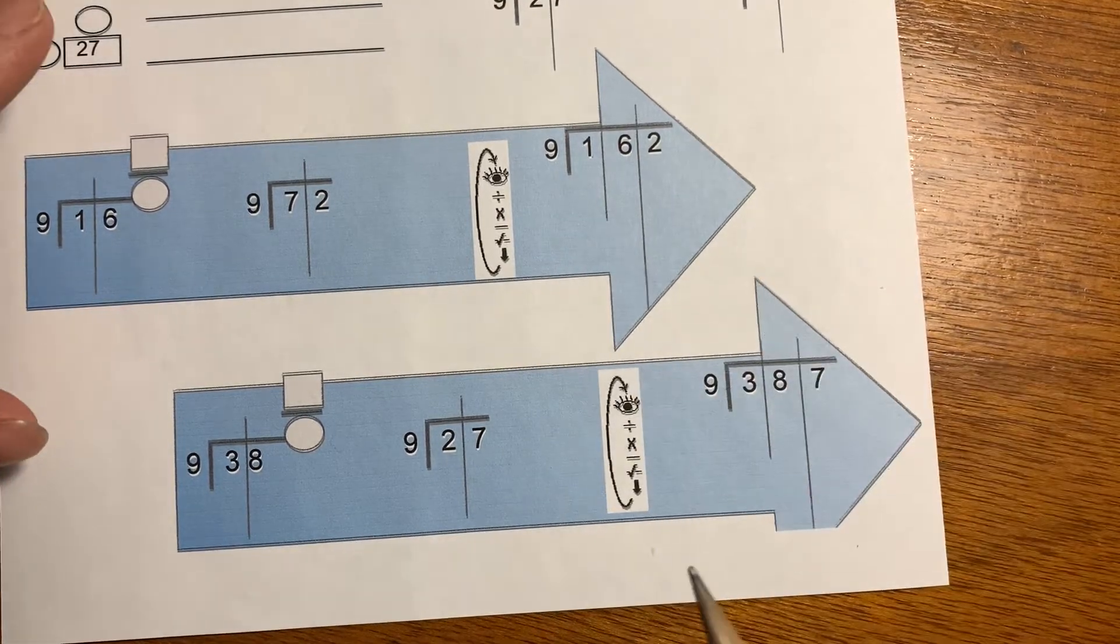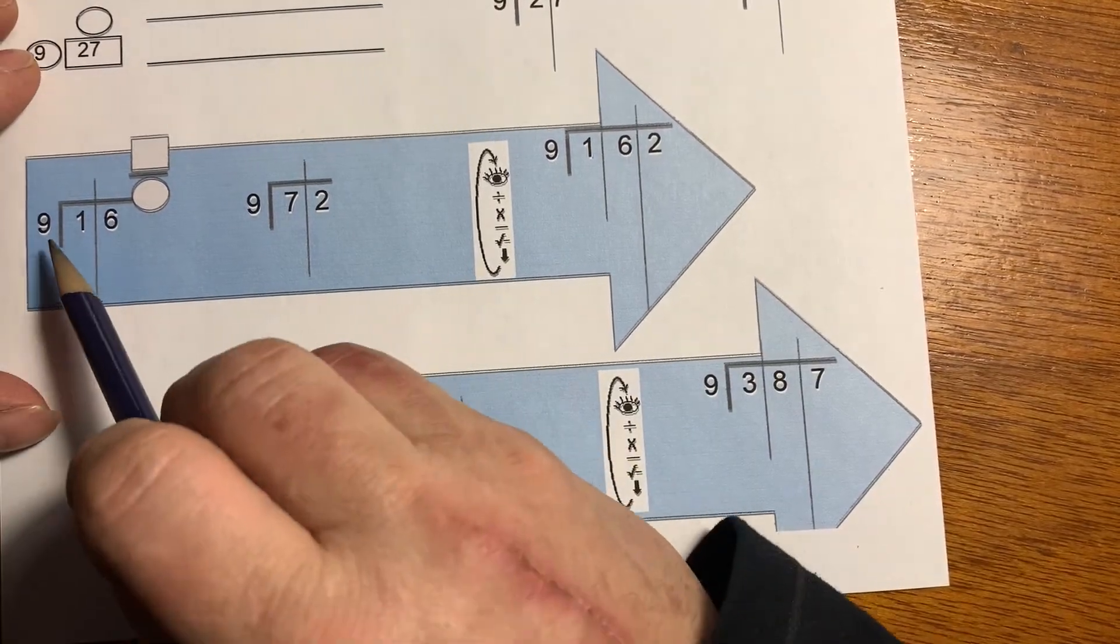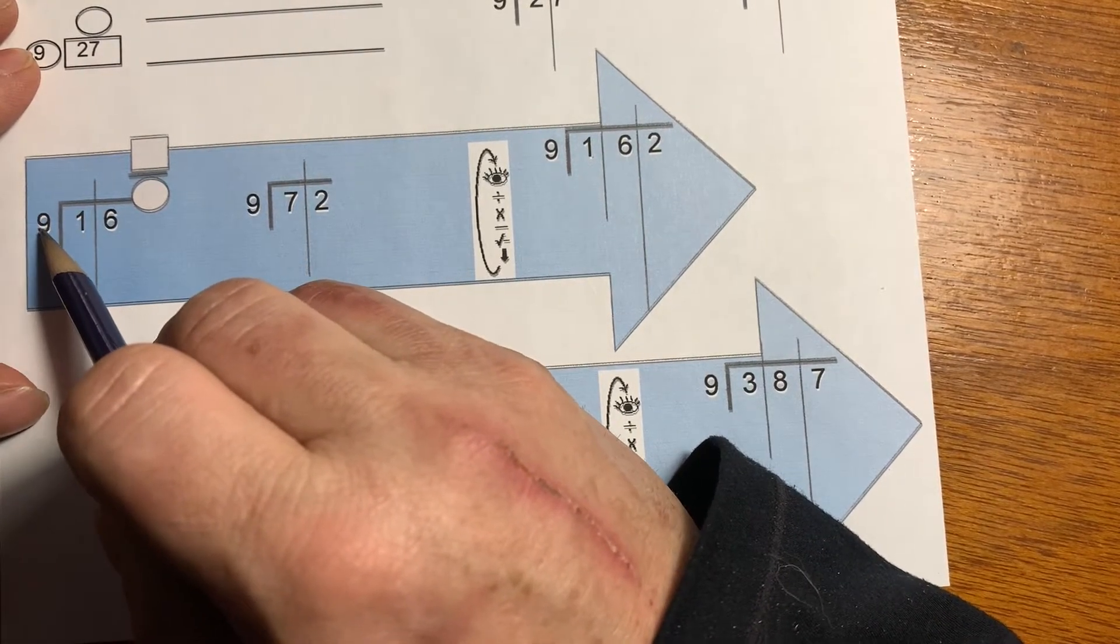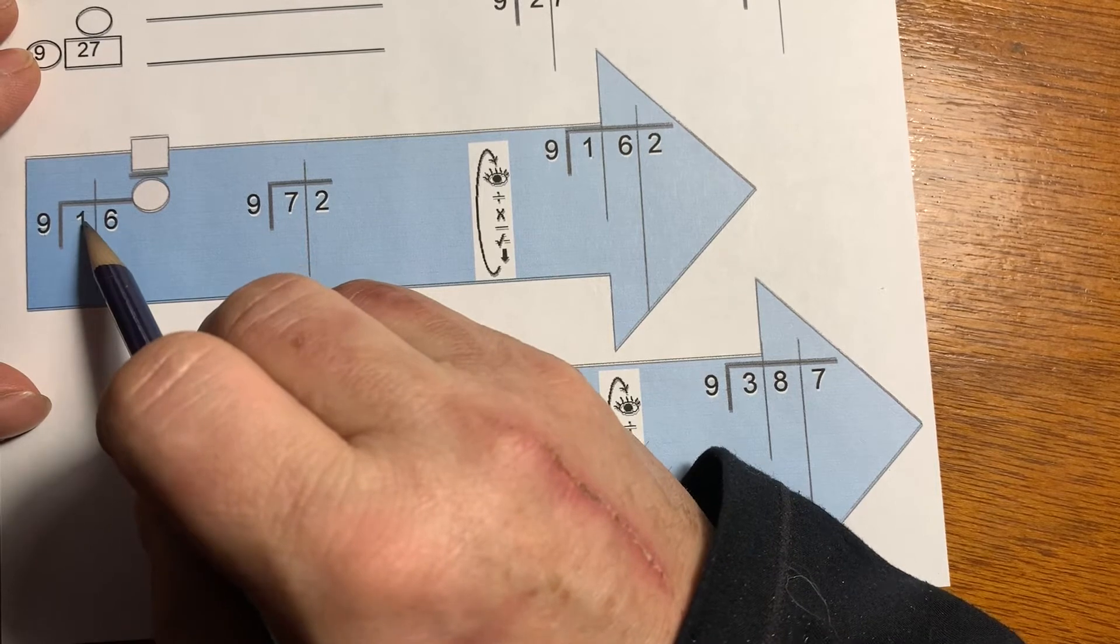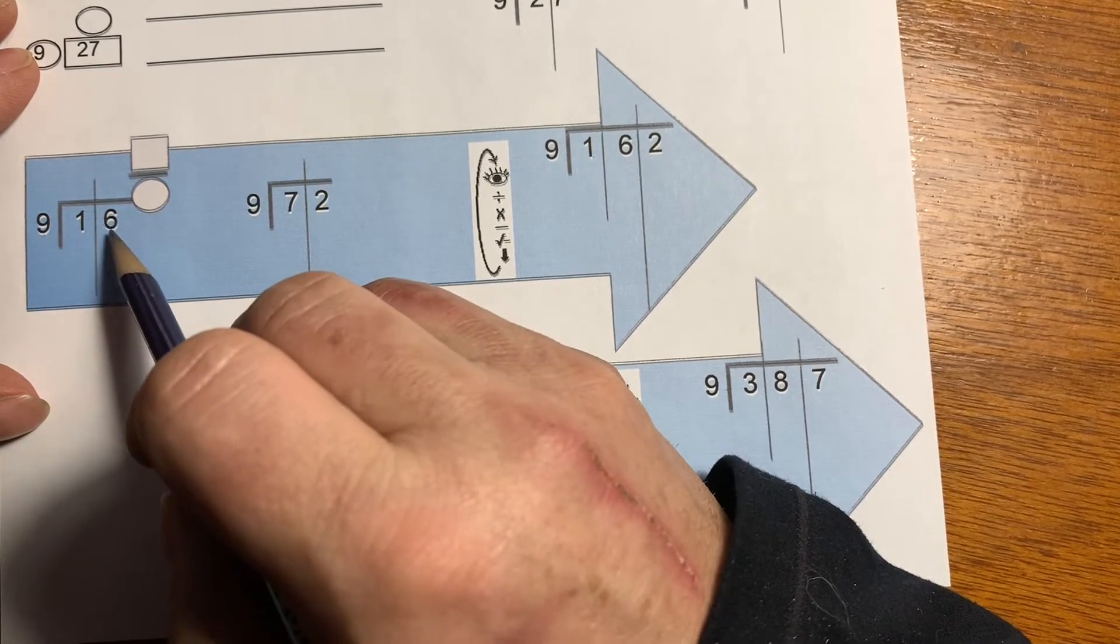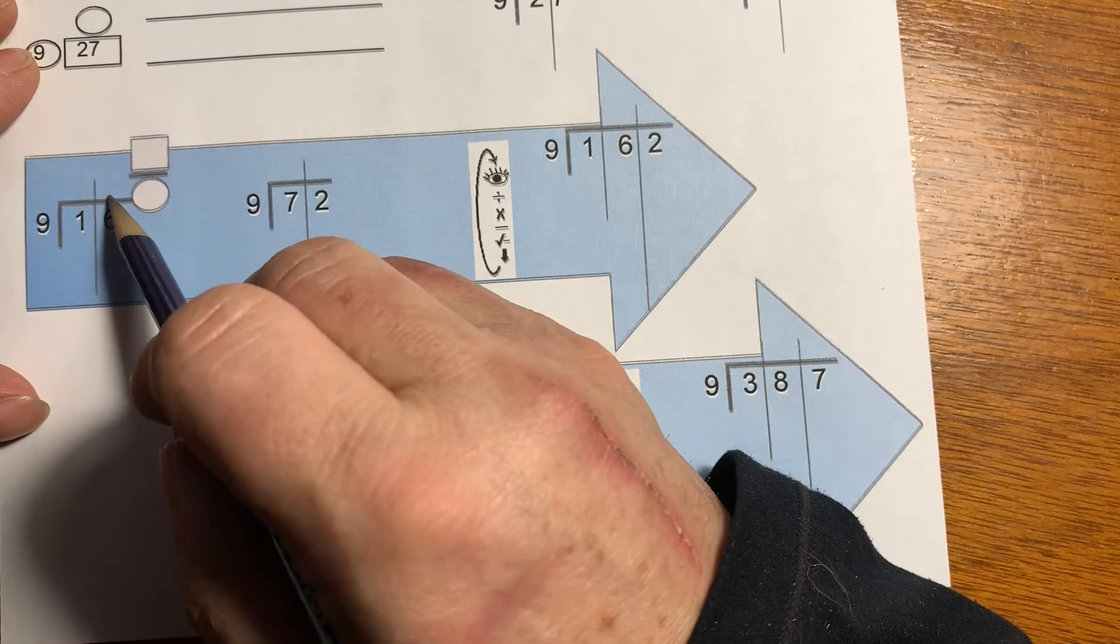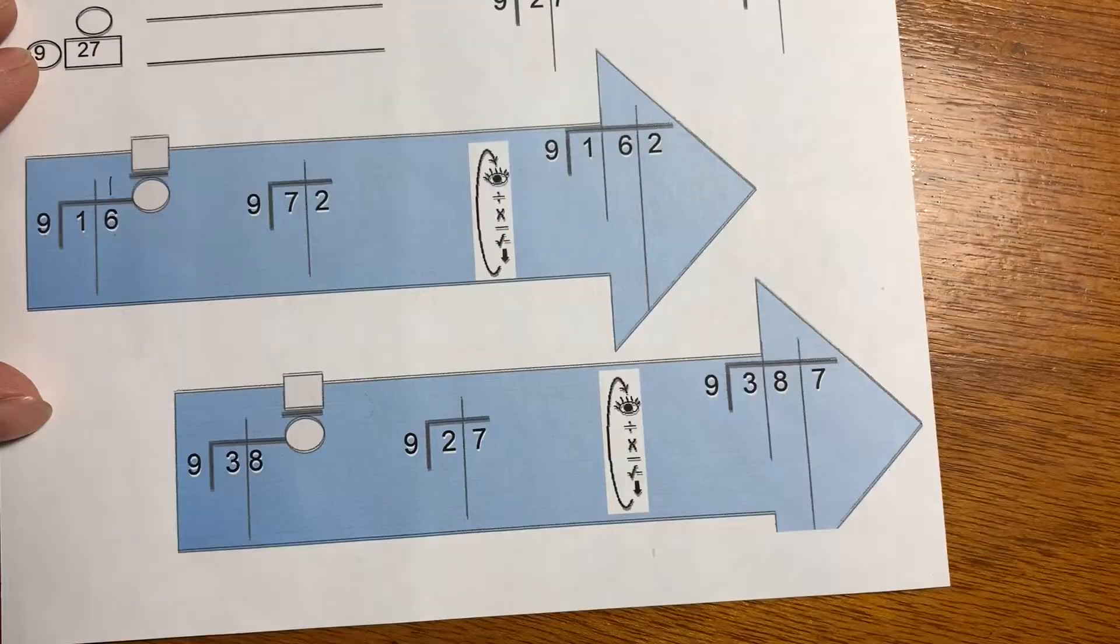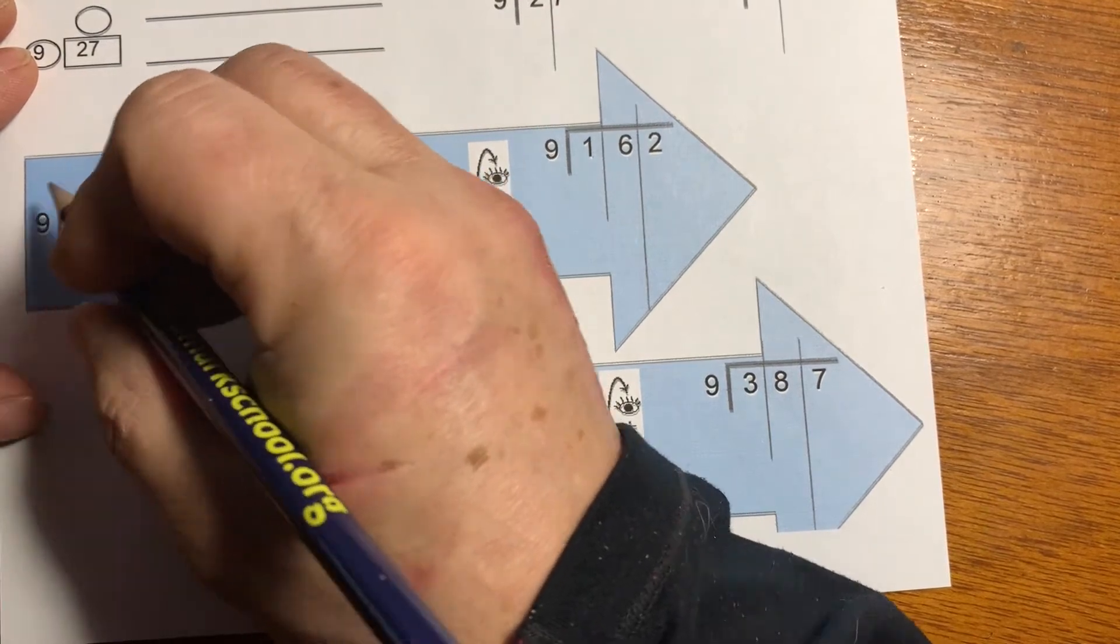We're going to start here: 16 divided by 9. I think of it like this—can I get 9 out of this 110 stick? No, but I can get 9 out of 16 ones, so my answer is going to go here. I can only get one 9 out of 16. 1 times 9 is 9.